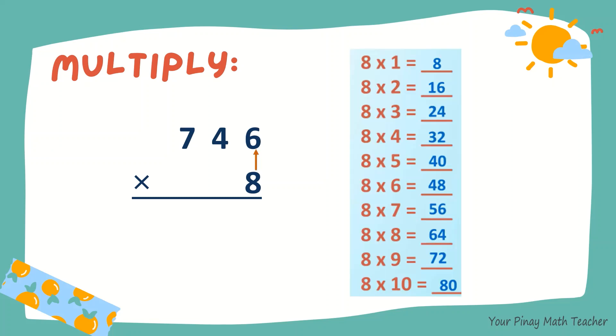Let's multiply 746 by 8. 8 times 6 is 48. 8, carry 4. 8 times 4, 32. Plus 4, 36.